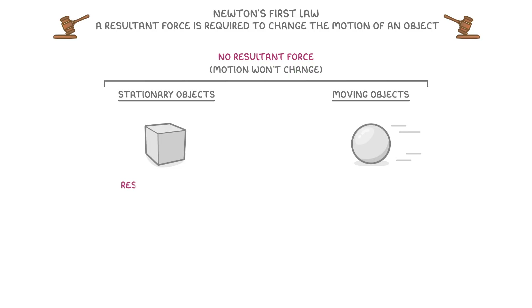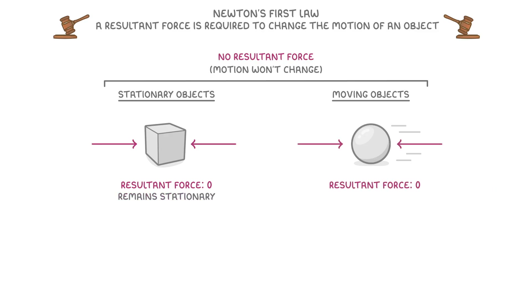This means that if the resultant force on a stationary object is zero, or in other words there is no resultant force, then the object will remain stationary. And if the resultant force on a moving object is zero, then it will carry on moving at the same velocity, because in both cases there's no resultant force acting on the objects, and so their motion won't change.